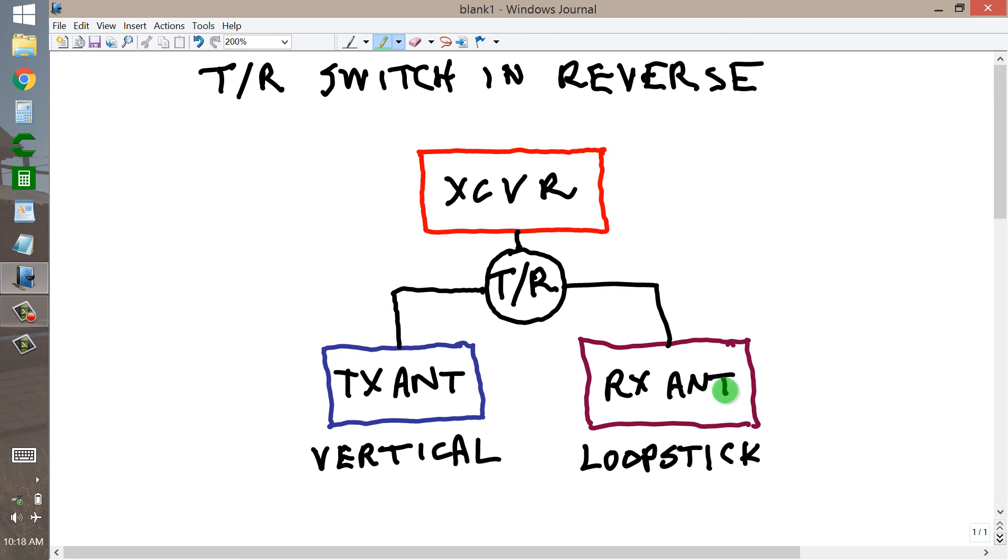This TR switch blocks the signal from the loop stick and its preamplifier, thereby preventing damage to the loop stick or preamplifier, and instead directs your transmitted signal to the transmitting antenna. So you have two separate antennas for a single radio rather than a single antenna for a separate receiver and transmitter.